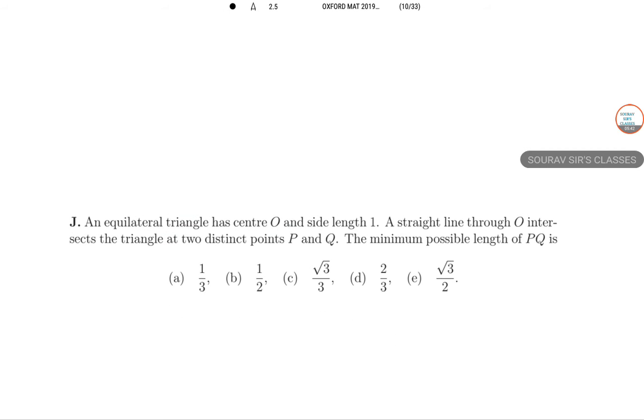The last question for this part is the J part. An equilateral triangle has center O and side length 1. A straight line through O intersects the triangle at two distinct points P and Q, the minimum possible length of PQ. Let θ be the angle which the line makes with the axis.